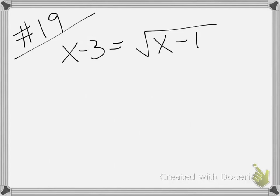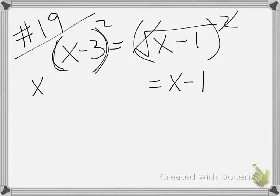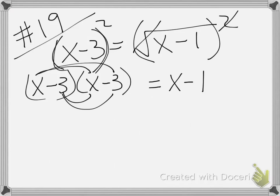The next example is number 19 where I have x minus 3 equals the square root of x minus 1. I need to get rid of the square root because I can't do anything else in the problem without getting rid of that square root. The square cancels the root and makes x minus 1 on the right side. But what you have to remember is x minus 3 squared means x minus 3 times itself, which means you have to FOIL.